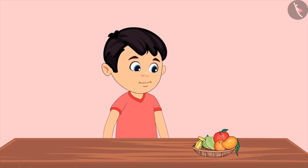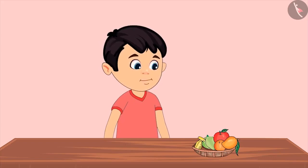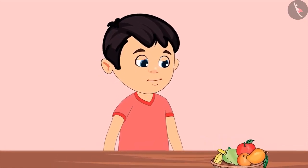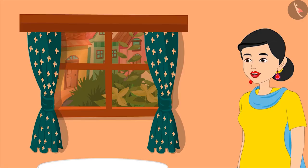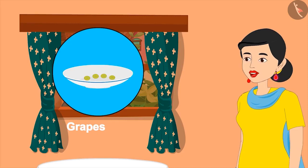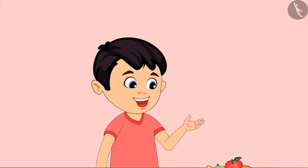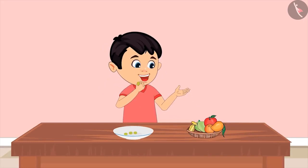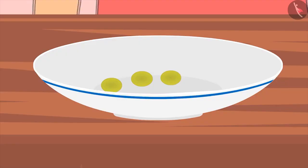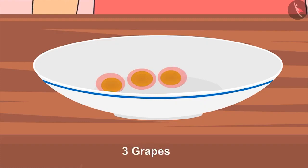Now Chotu has started eating fruits instead of sweets. Let's see which fruit he wants to eat today. Mom, please give me some grapes to eat. Pinky had eaten grapes and there are only four left. Have these, I will bring more later. I have eaten one out of four grapes. Now tell me how many grapes are left? If I ate one out of four grapes, then now there are one, two and three. That means three grapes.